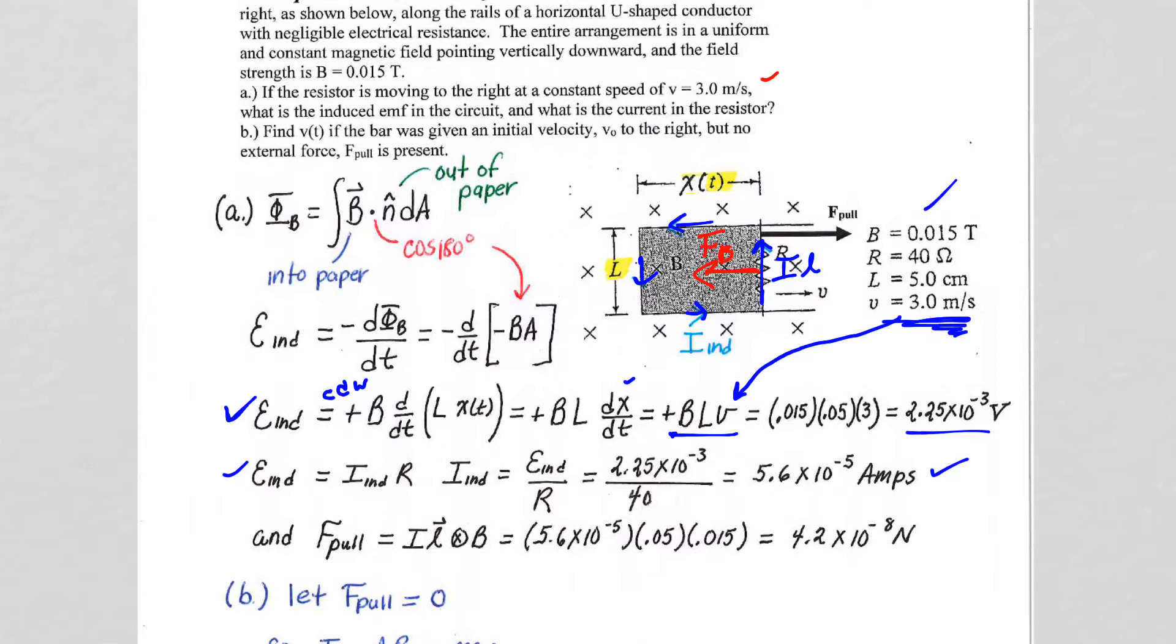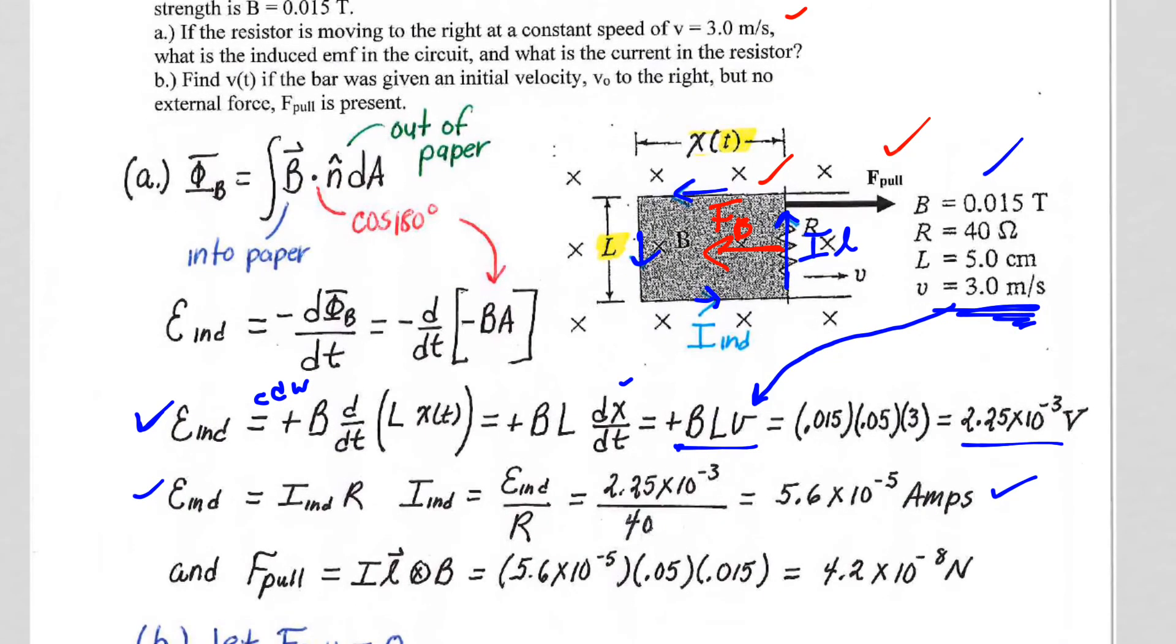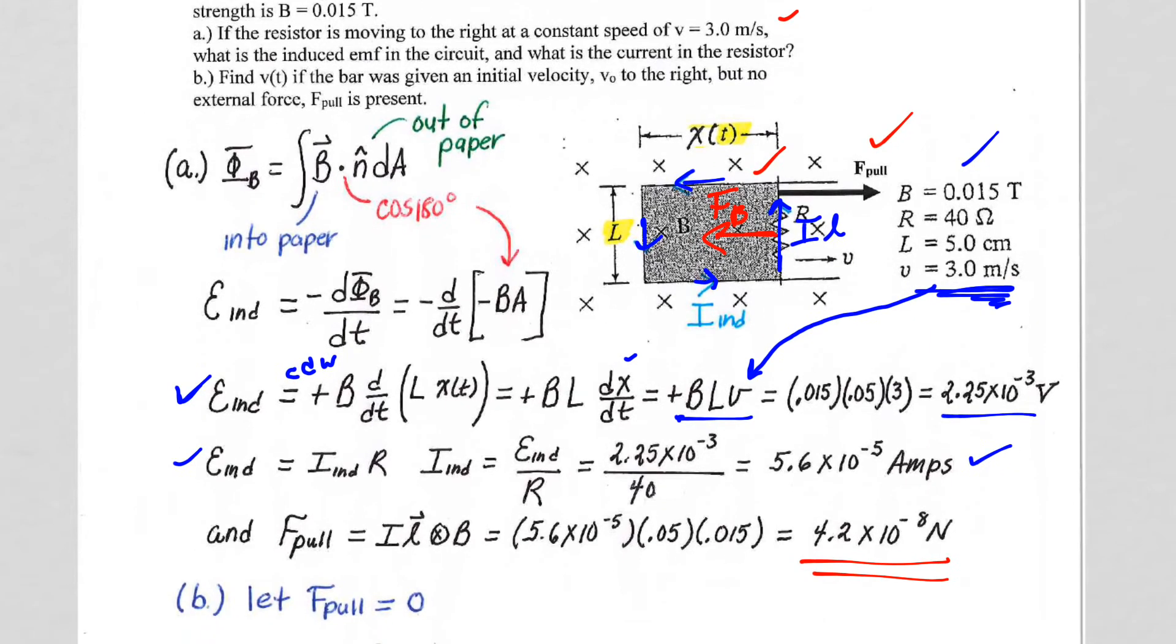But we can keep it moving at a speed of 3 if the force we're pulling with equals F sub B, so that's exactly what we do. So we say the force pull for part A has to equal the IL cross B, so we solve for IL cross B, and we get 4.2 times 10 to the minus 8 newtons. So hopefully that part makes sense.